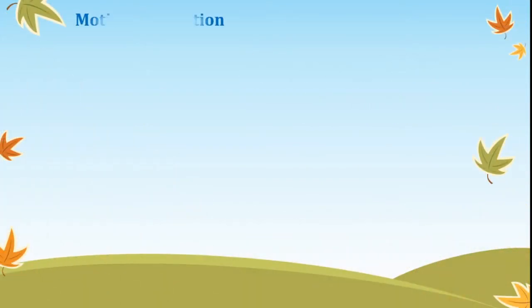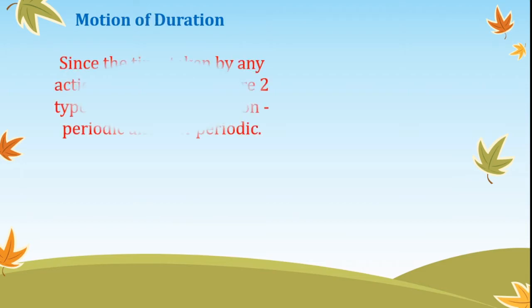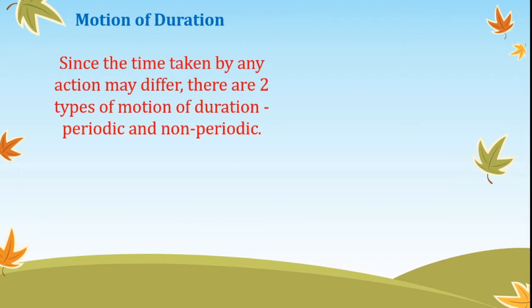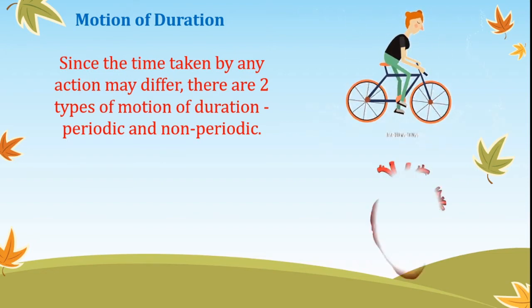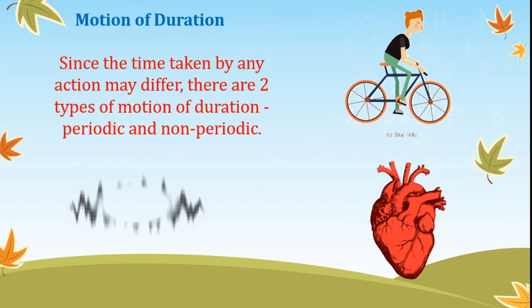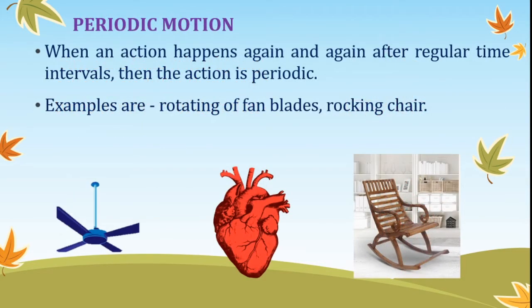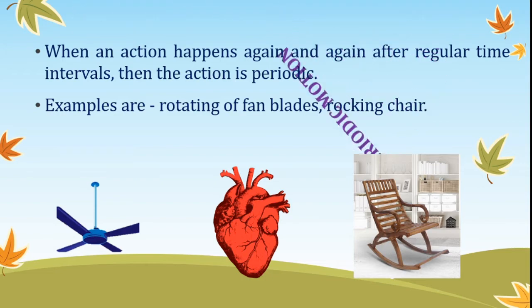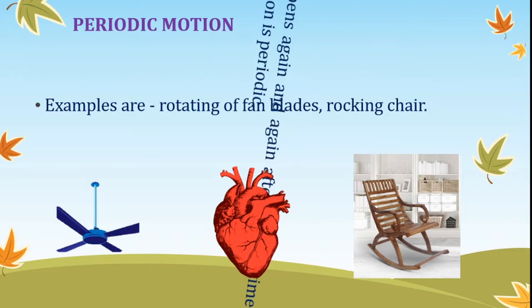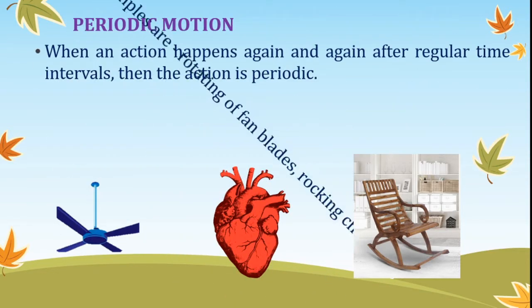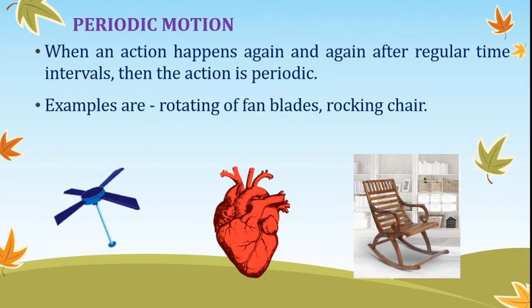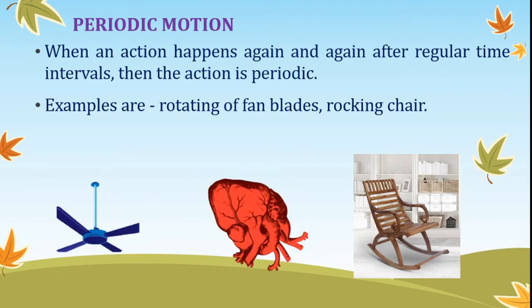Motion duration. The time taken by any action may differ. Motion duration can be periodic or non-periodic. An action is periodic when it happens again and again at regular time intervals. Rotating fan blades, beating of heart, and a rocking chair are examples of periodic motion.